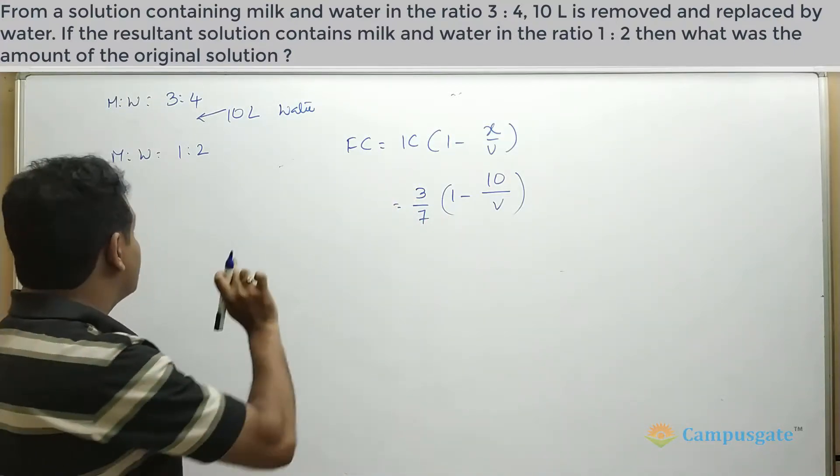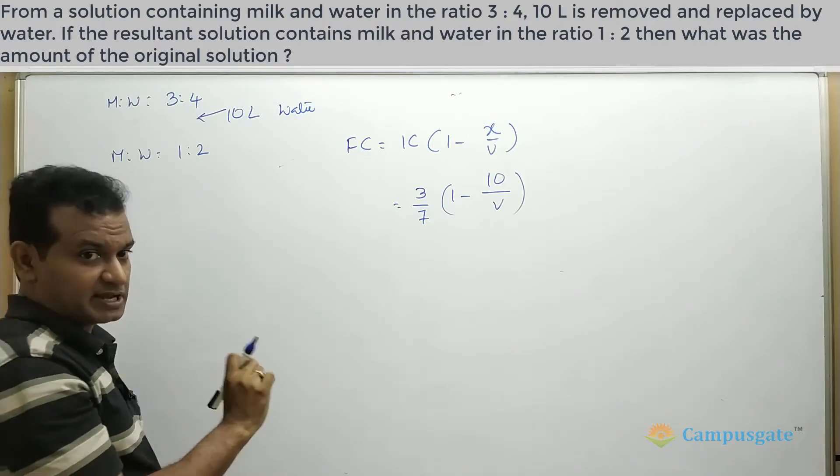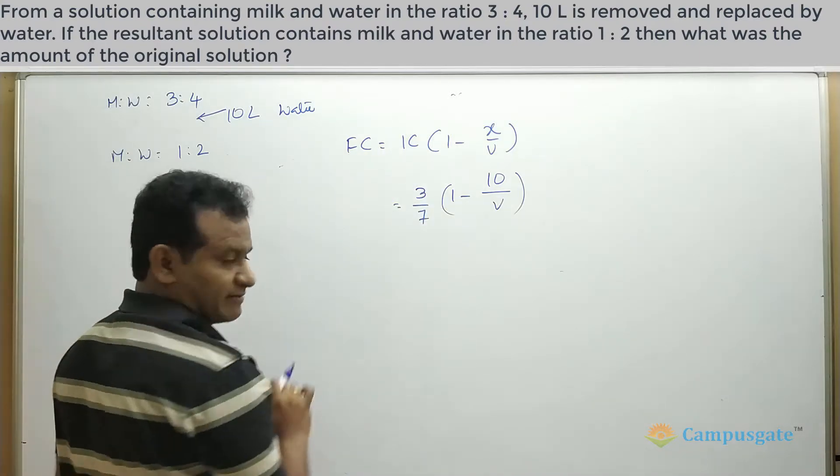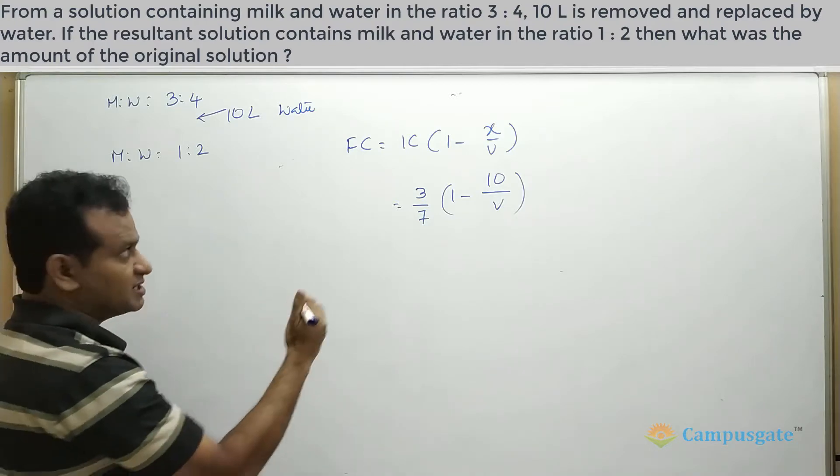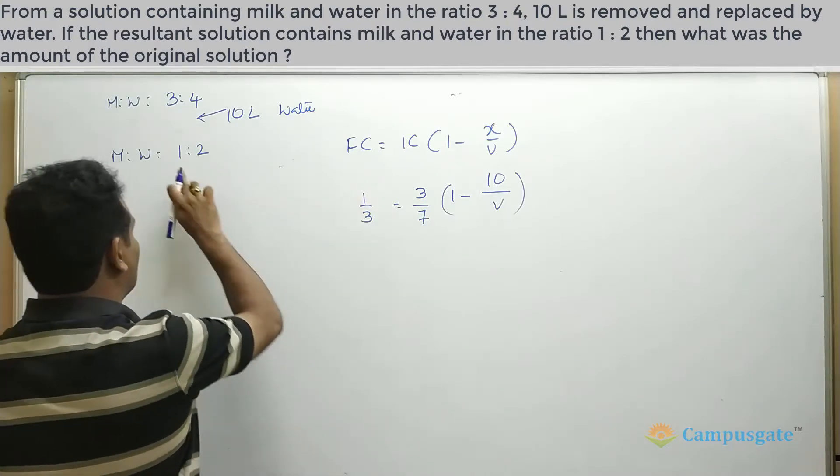Here the milk proportion we need to take, that is a concentration, so 3 by 7. Now the final milk proportion is 1 by 3, so 1 by 1 plus 2, 1 by 3.